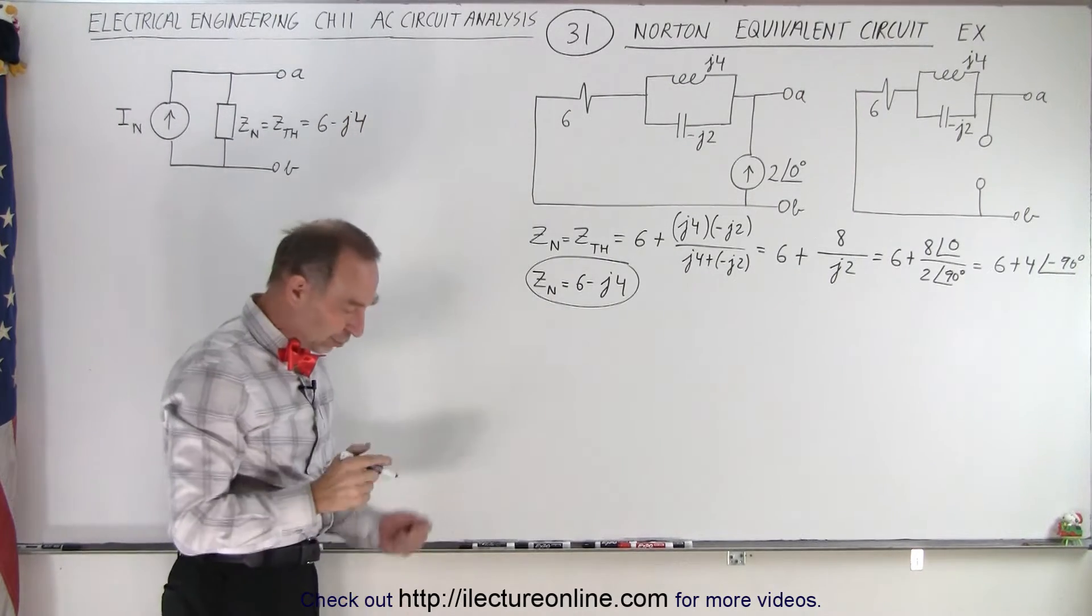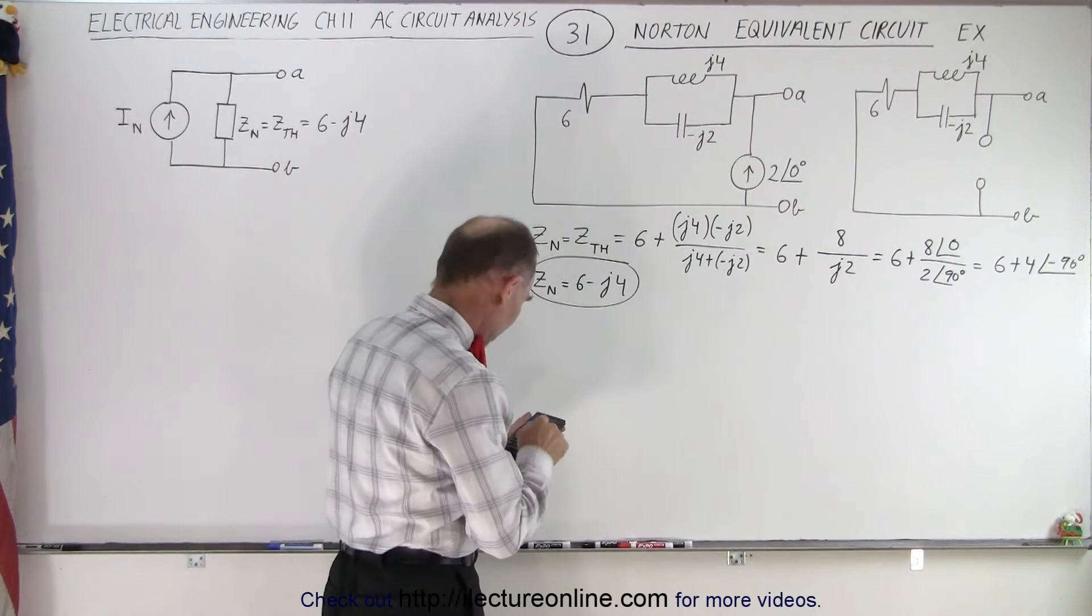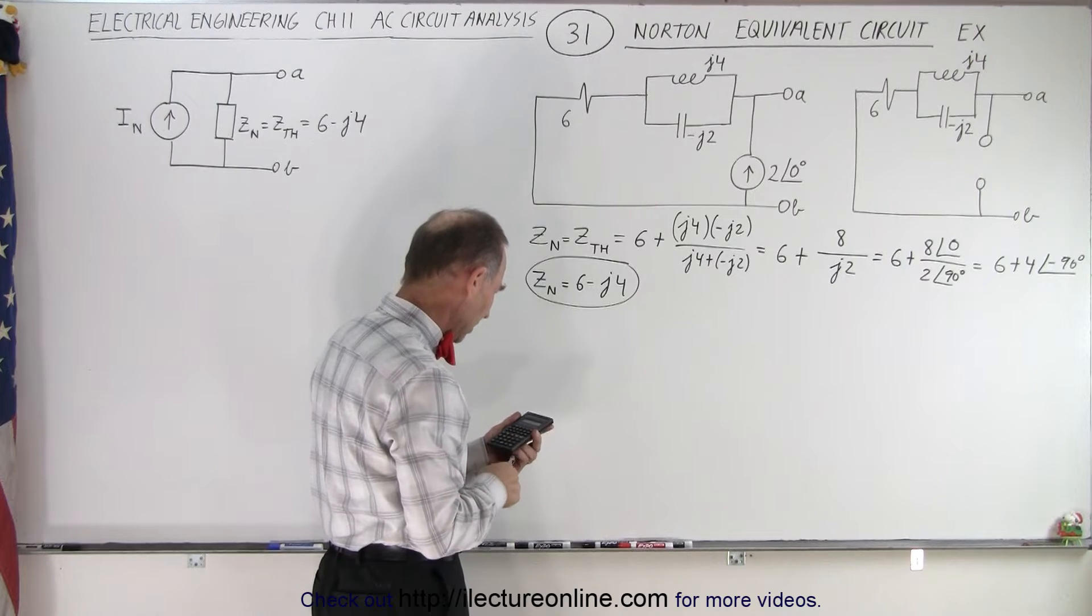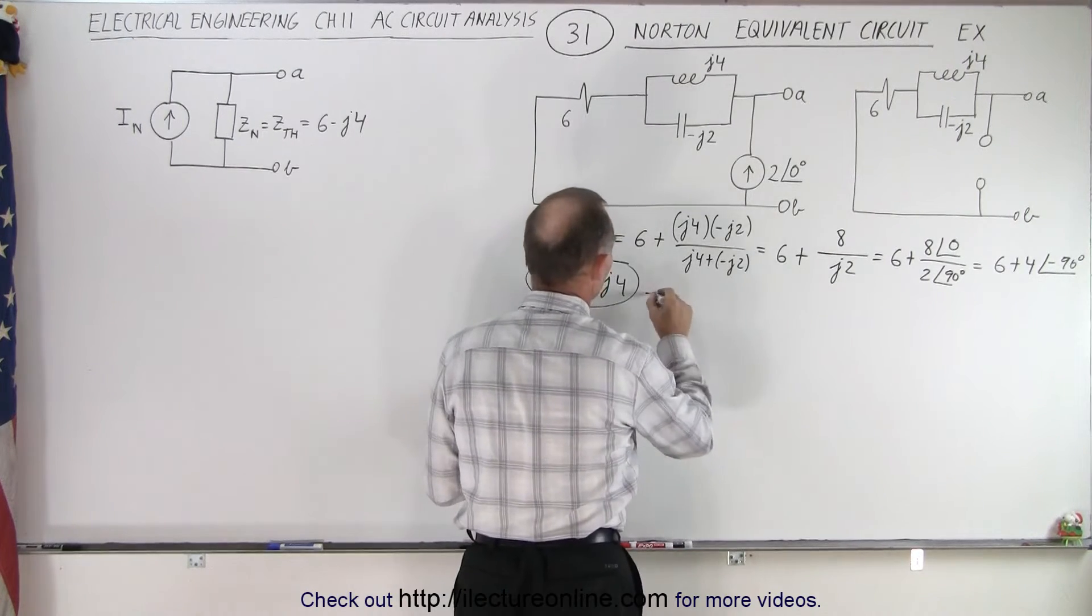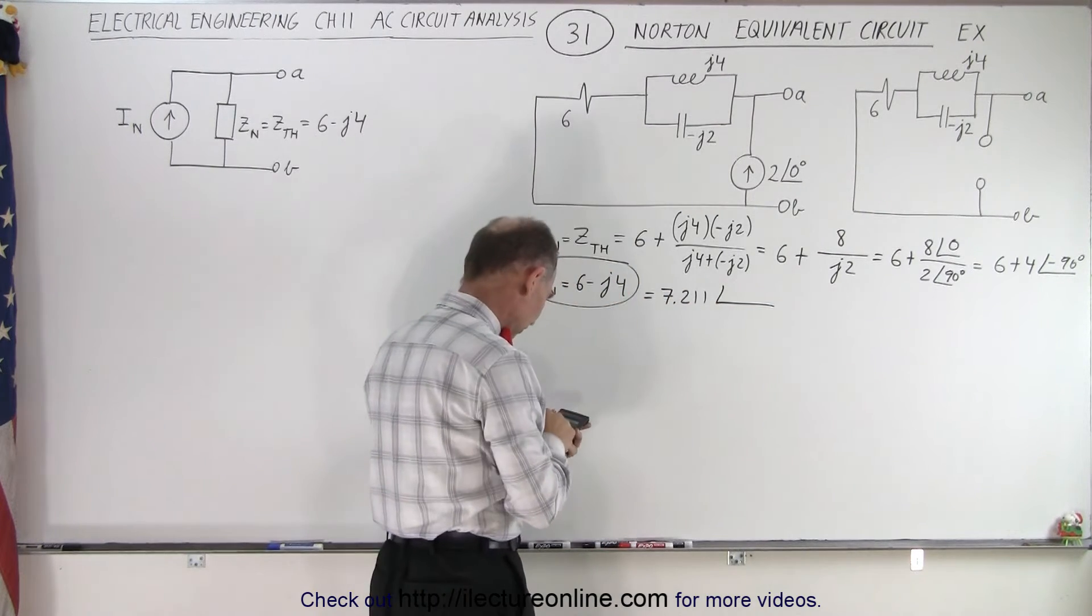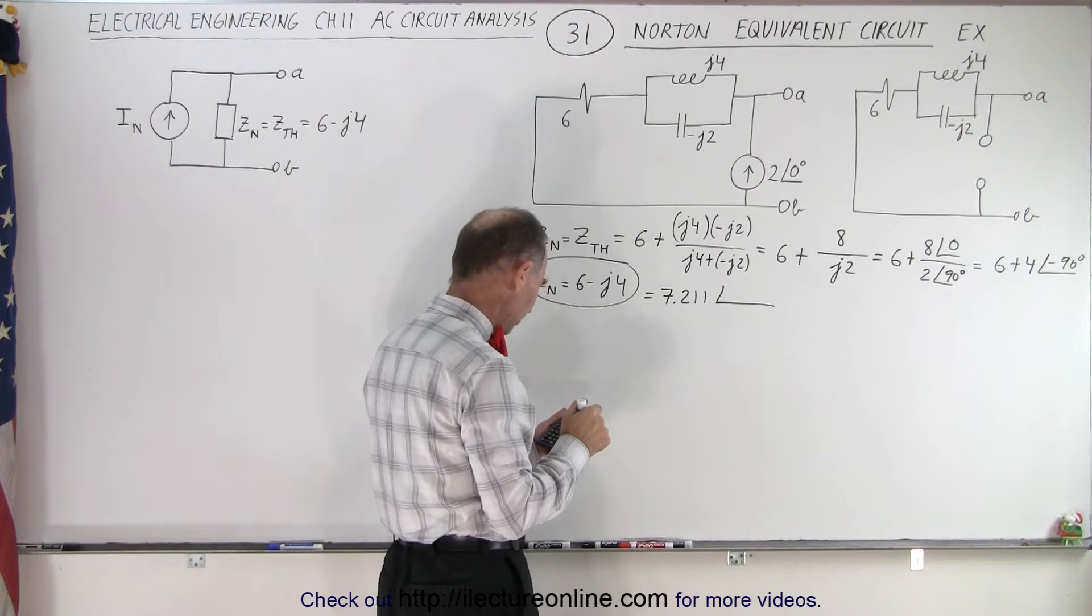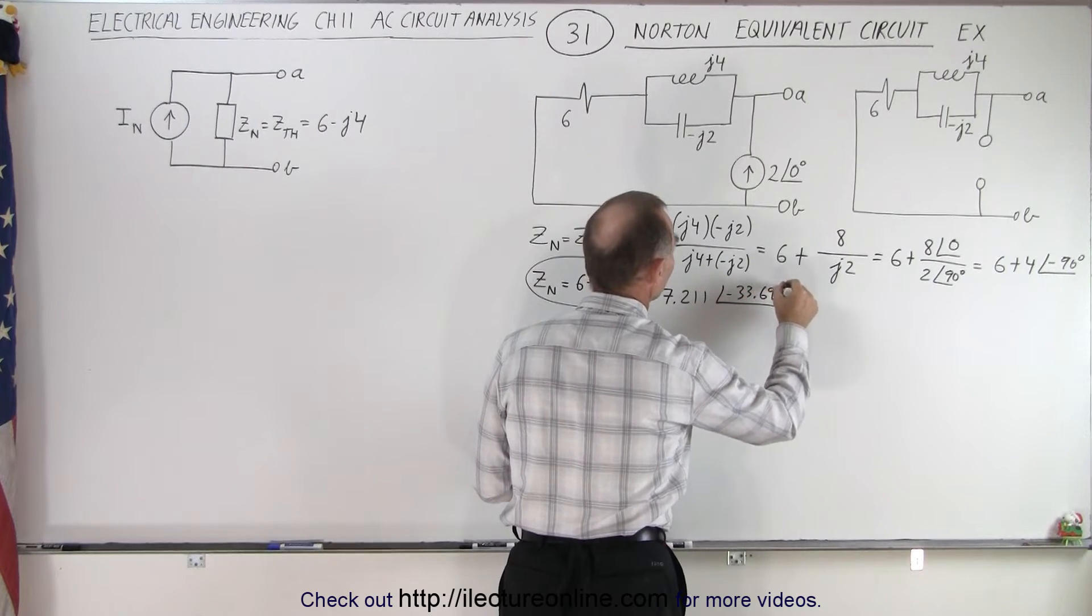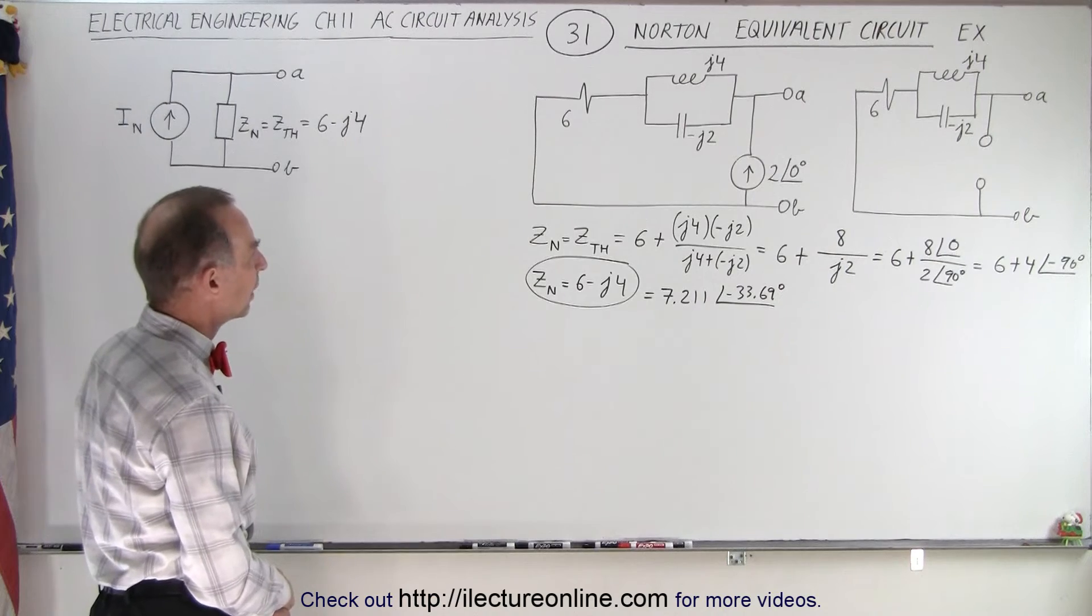Now we might as well find the magnitude and phase angle format because we're probably going to need it. That becomes 36 plus 16, take the square root which is 7.211. So this is equal to 7.211 with a phase angle of 4 divided by 6, that's negative 33.69 degrees. So now we have it in both formats.